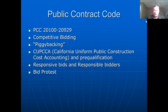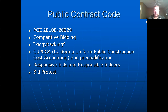We probably will not be doing construction ourselves using our own city employees — we will be contracting out. Here in California, you need to abide by the public contract code, PCC-20100 through 20929. It's a very expansive and detailed code. It requires competitive bidding for most governments up to a certain threshold. Depending on the type of government and type of project, you need competitive bidding if the cost exceeds threshold amounts such as $50,000, $75,000, $100,000, or $200,000.